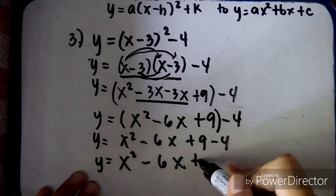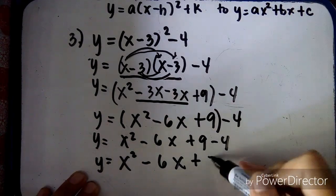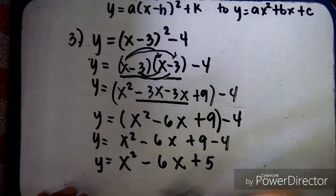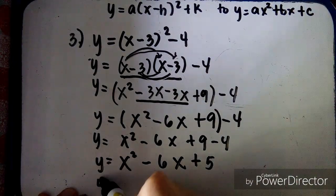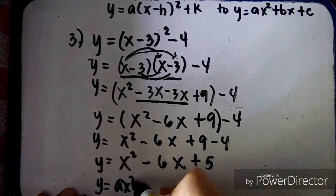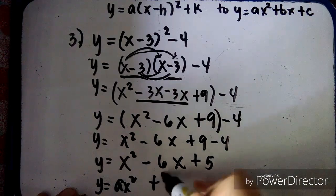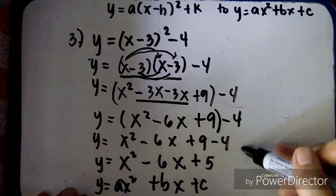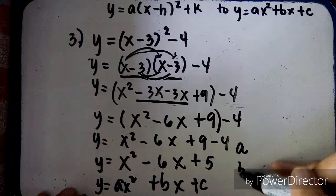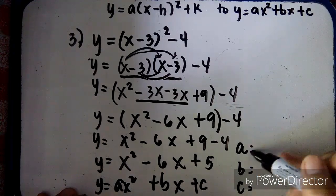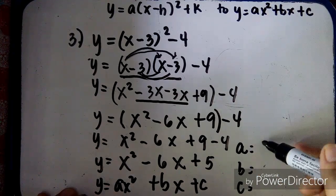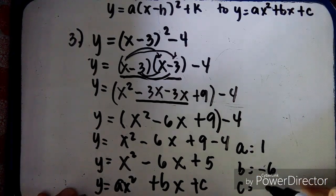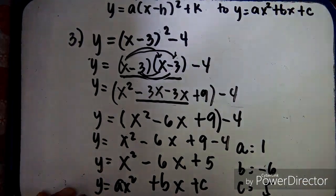We have two constants, 9 and negative 4, so we simplify: y equals x squared minus 6x plus 5. Now it is in the form y equals ax squared plus bx plus c. So a is 1, b is negative 6, and c is 5.